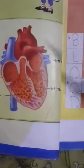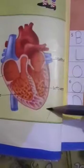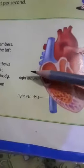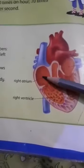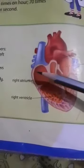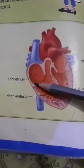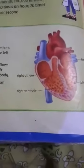The oxygenated blood goes to the left atrium from the left ventricle and moves towards the whole body. In the case of the right atrium, the blood is deoxygenated. It moves towards the right ventricle, and from the right ventricle it moves towards the lungs.